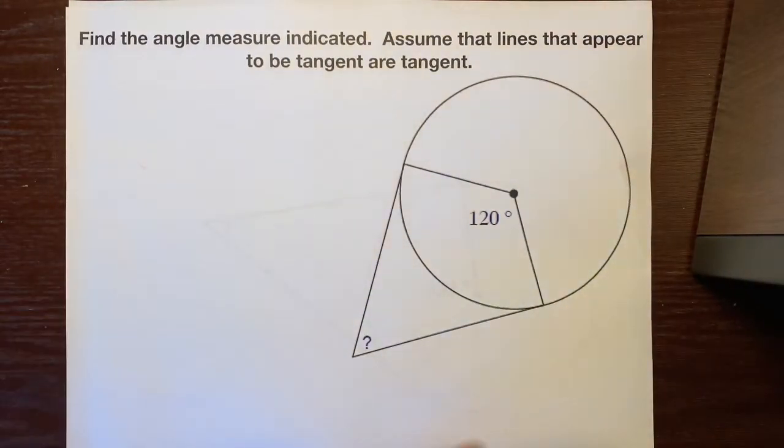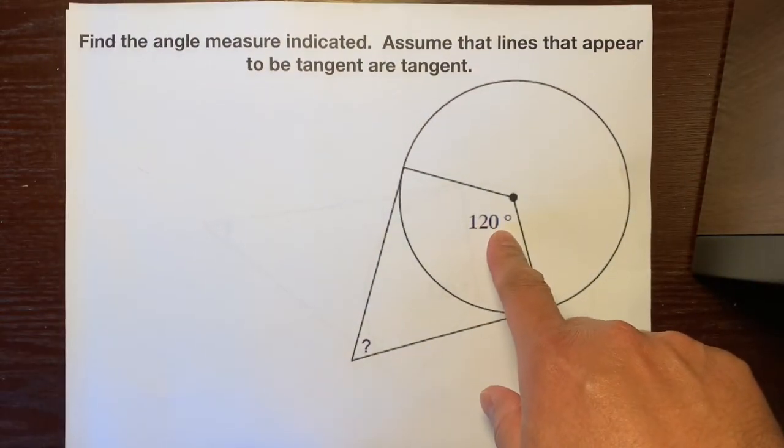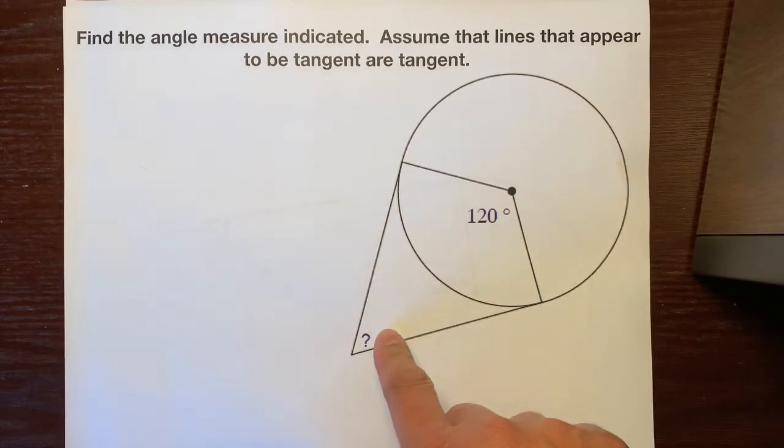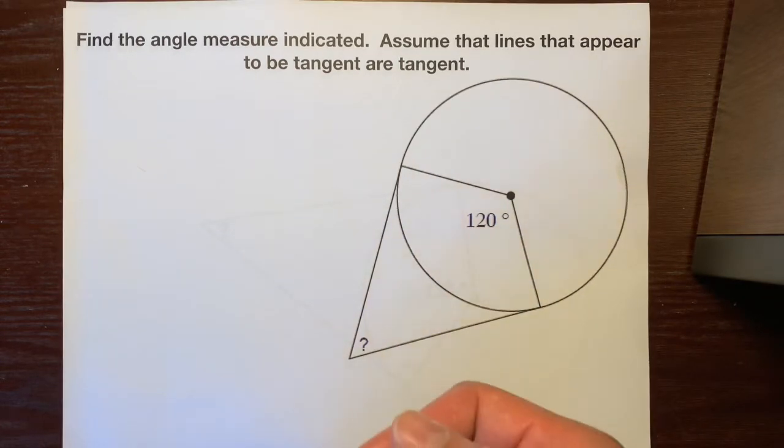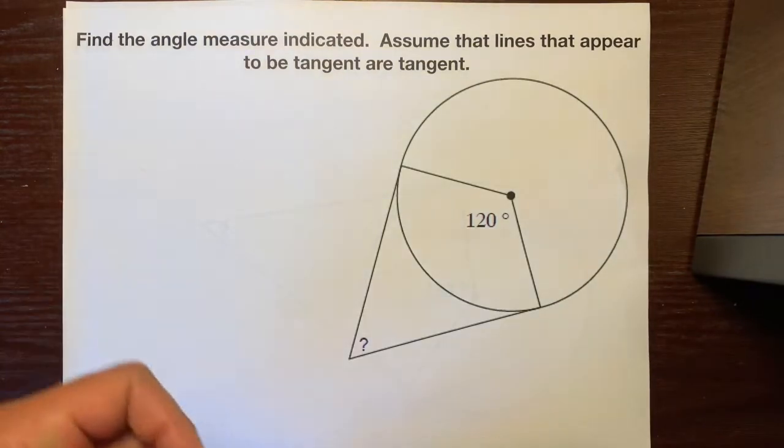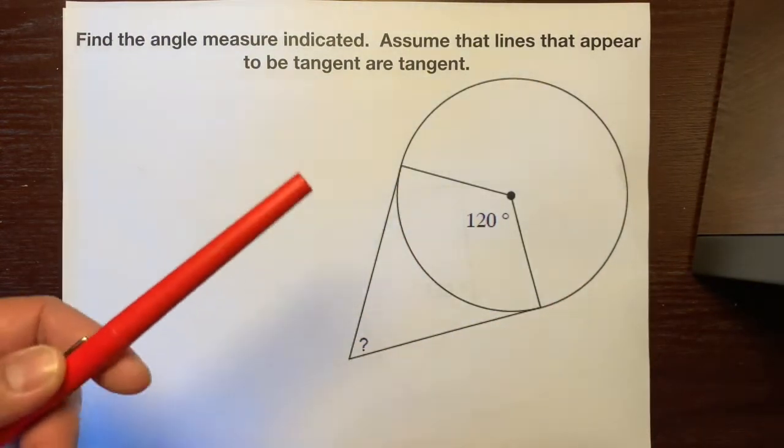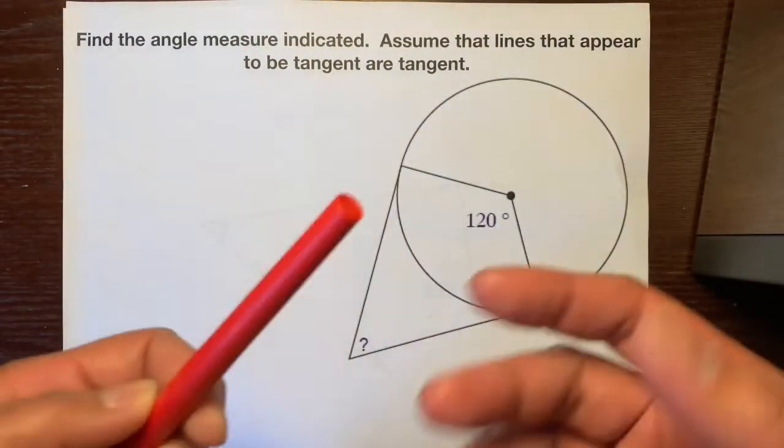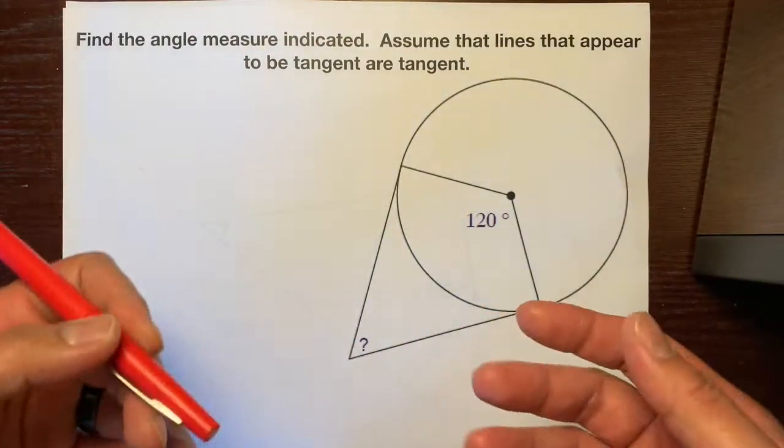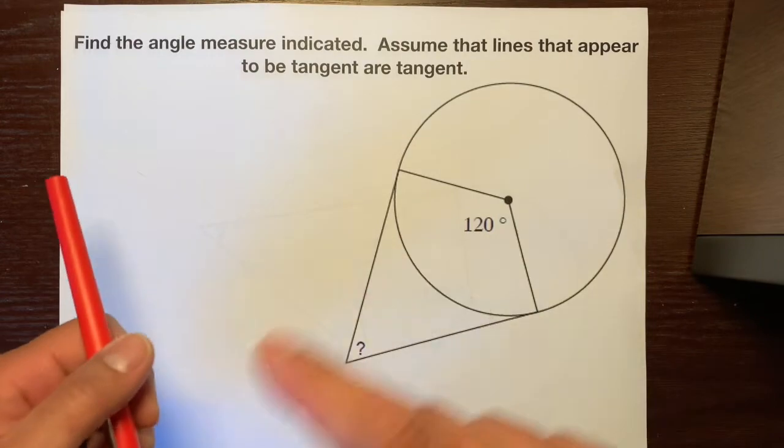A lot of people are just going to say okay, this is 120 degrees, so I'm just going to divide it by 2, and that'll be 60 degrees, and that's the correct answer. Yes, that is the correct answer, but that doesn't work for all problems like this. So I'm going to show you the correct way of getting the correct answer and show you why this isn't necessarily half of this.